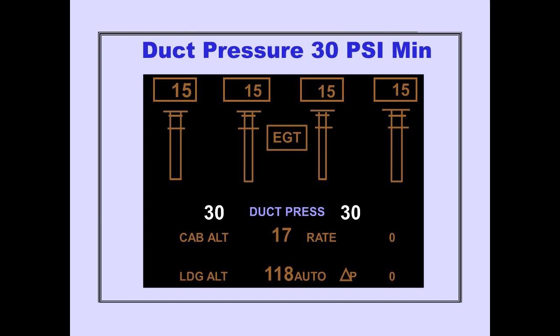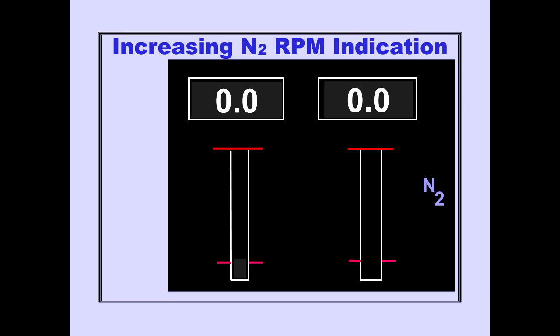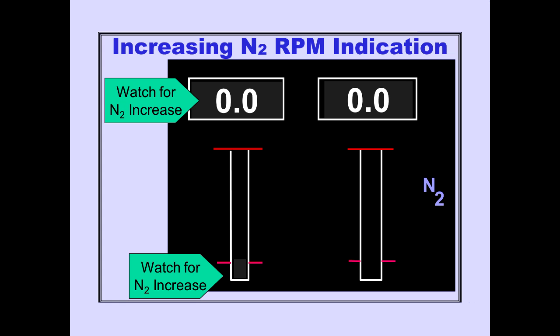At least 30 PSI bleed air duct pressure is required for starting. Increasing N2 RPM indicates the N2 rotor is turning.